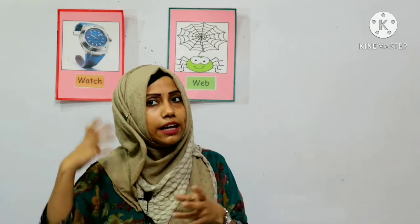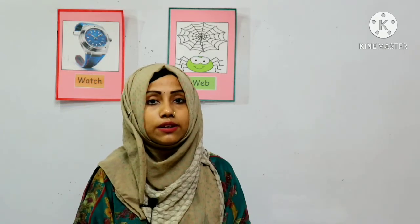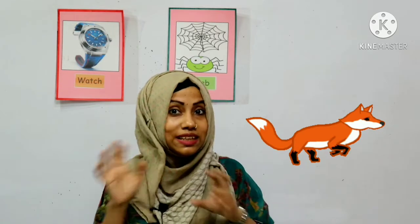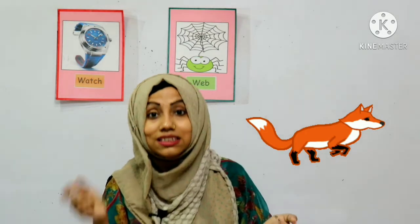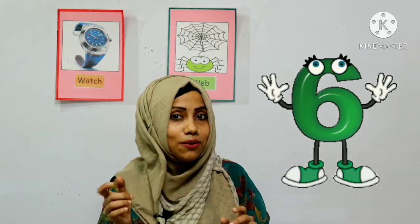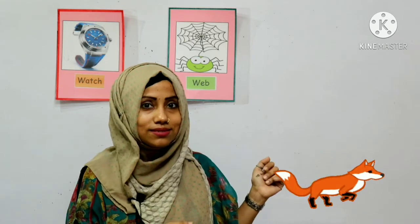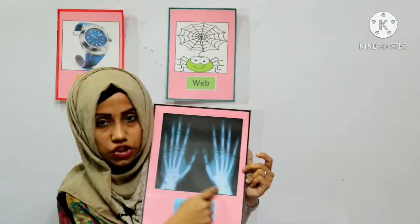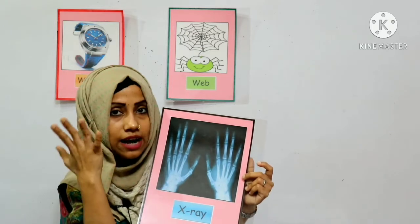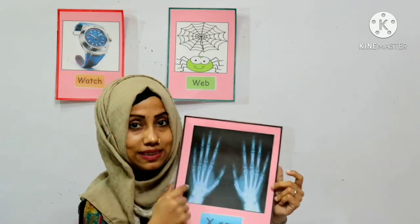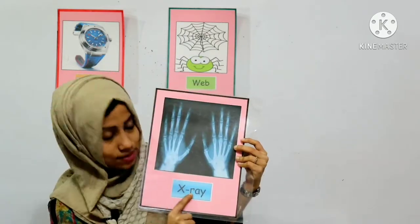Can you make the sound and tell me what words we can get with letter X? Fox — I know F sound comes first, but X comes at the ending. Six — first letter is S, but the ending sound is X. Very good. Fox, six. Can you tell me what is this? This is a hand picture — a bone picture, an X-ray of our hand. This is the picture of an X-ray.